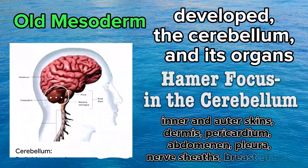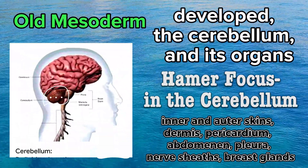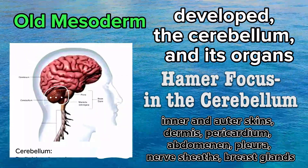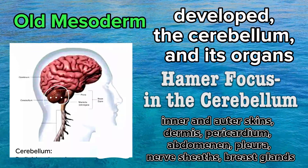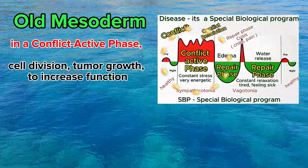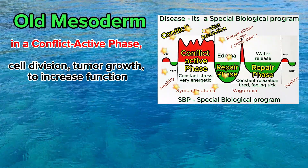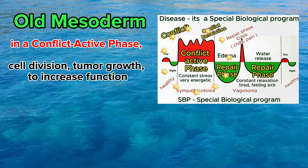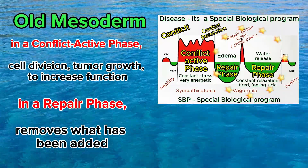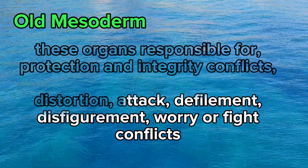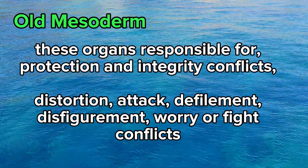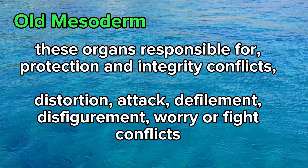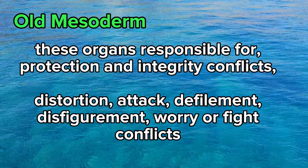Old mesoderm in detail: it developed the cerebellum and its organs — inner and outer skins, dermis, pericardium, peritoneum, pleura, nerve sheaths, and breast glands. In the conflict active phase: cell division, tumor growth to increase function. In the repair phase: it removes what has been added. These organs are responsible for protection and integrity conflicts — distortion, attack, defilement, disfigurement, worry or fight conflicts.